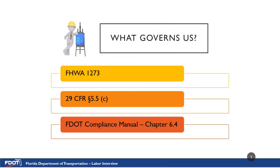The regulations that govern wage payments and equal opportunity are FHWA 1273, 29 CFR 5.5, Section C, and FDOT Compliance Manual Chapter 6.4.